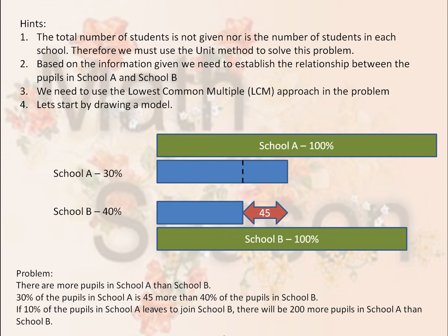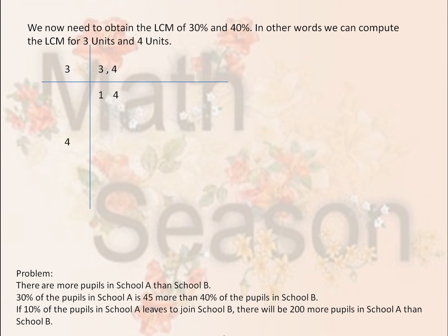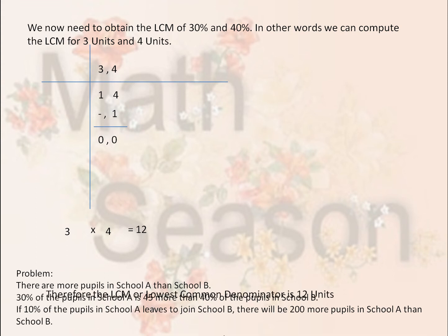Now, if you take 30% of School A and 40% of School B, we can see that School A, the blue bar, is greater by 45 pupils. We now need to obtain the LCM of 30% and 40% — in other words, the LCM for 3 units and 4 units. Divide the numbers until there's no balance, multiply the products of those numbers, and you get 12. 12 is the LCM.